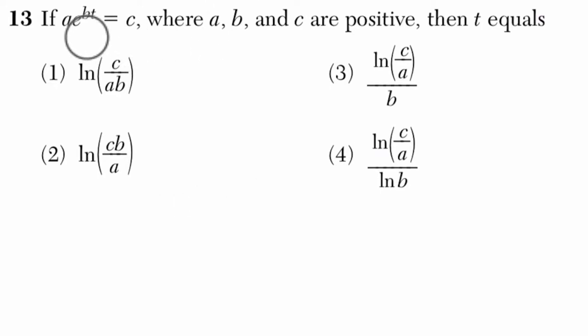Okay, so what's going on here? It says that if a times e to the power of bt equals c, where a, b, and c are positive, then t equals which of the following? We come out to choices, but I would just say here we're just looking at exponents and logarithms, so let's see what we can do.